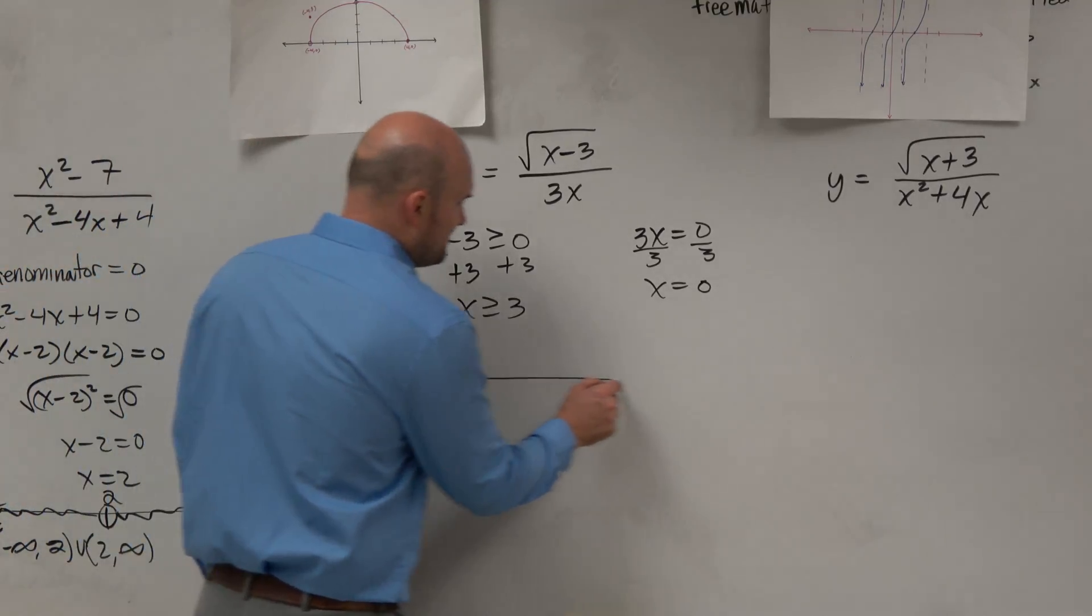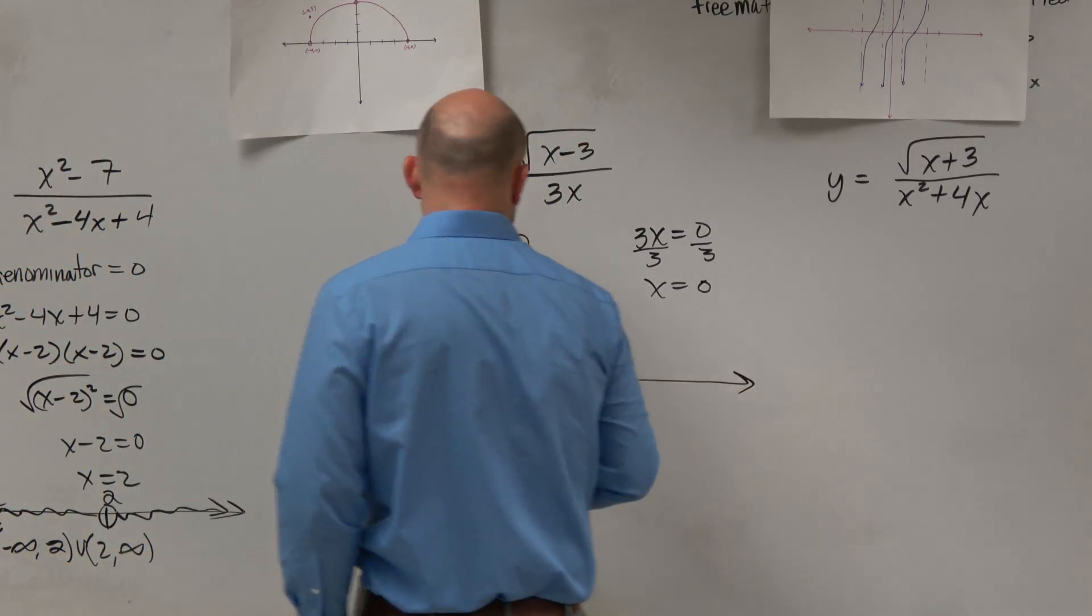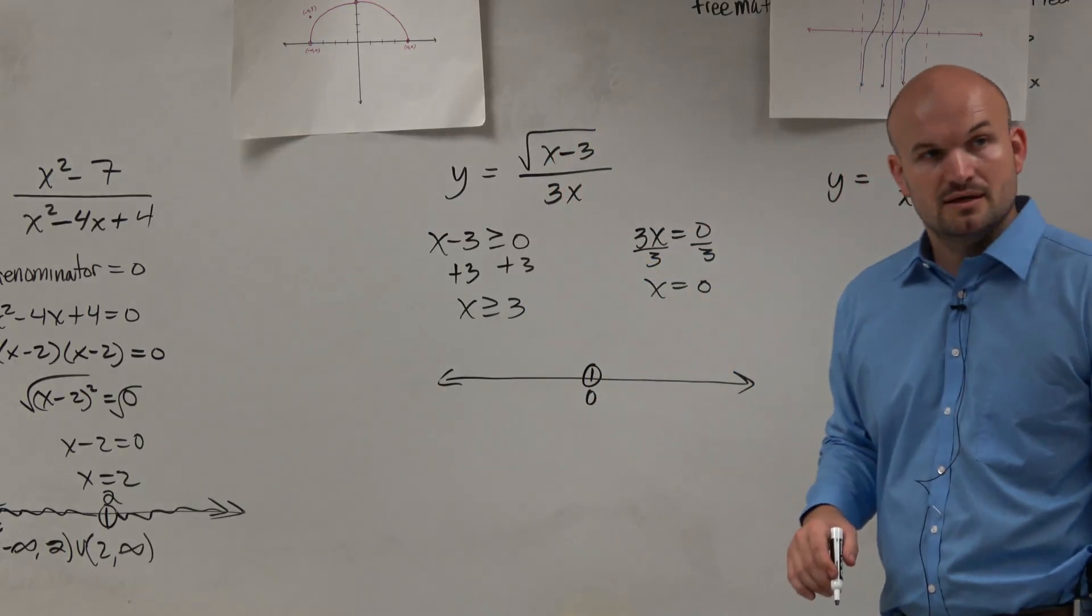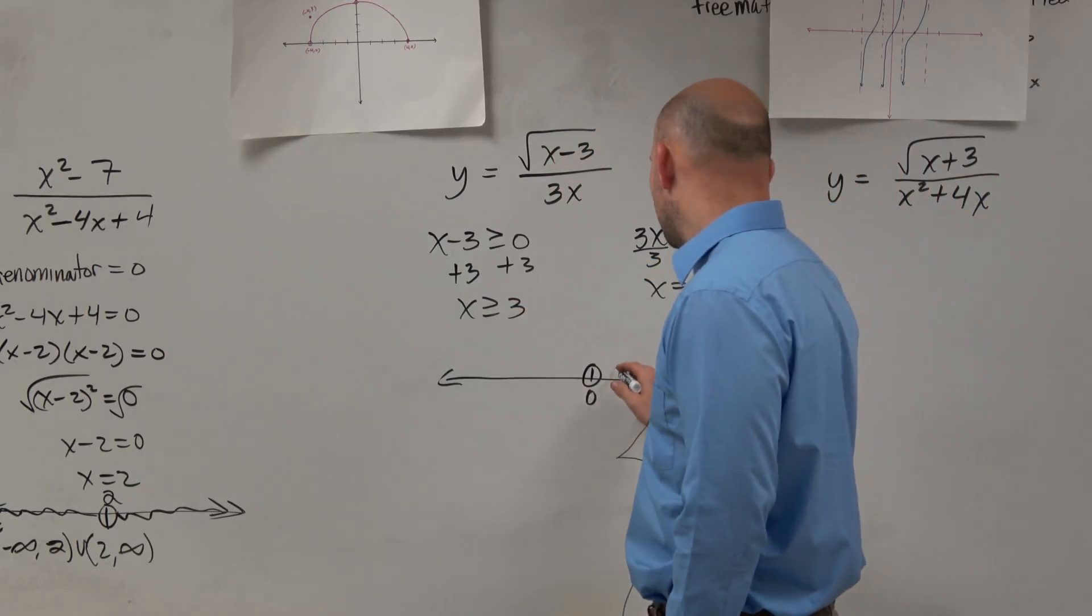So as we go ahead and graph this, let's put 0 here. 0 is undefined. But then it says x has to be greater than or equal to 3.